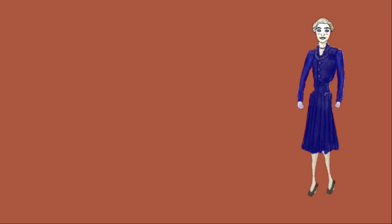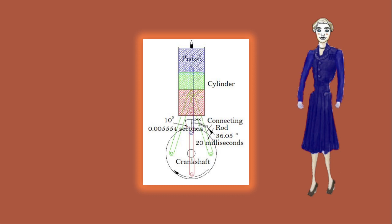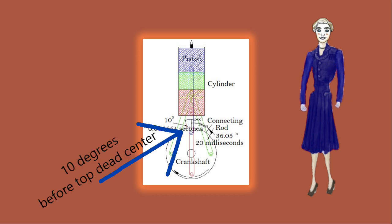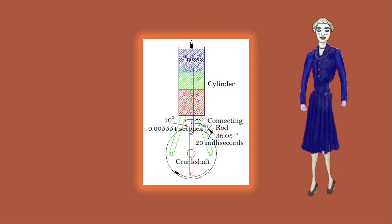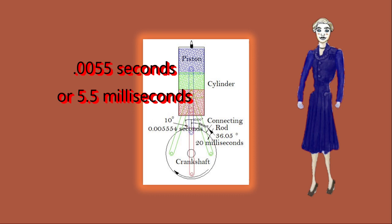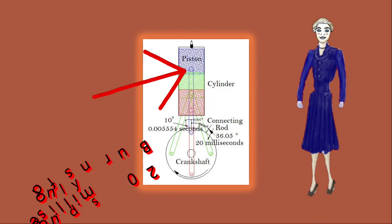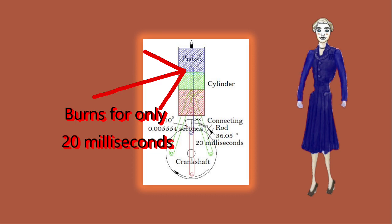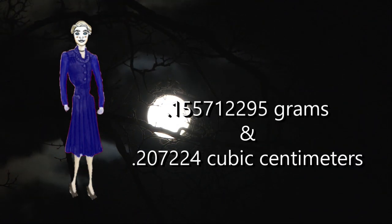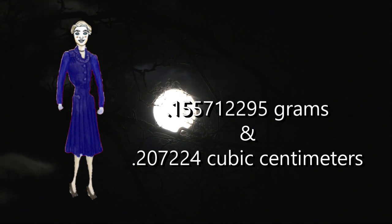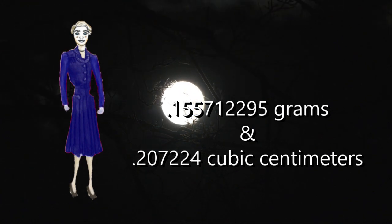The flash energy just calculated is what an internal combustion engine uses — all the rest is discarded as lost heat. In this example, 10 degrees before the piston reaches the top of the cylinder is called the dwell angle. Somewhere in this time period the spark plug fires. At 1,000 revolutions per minute this is 0.0055 seconds or 5.5 milliseconds. The burn duration of thousands of degrees and thousands of pounds of pressure happens in 20 milliseconds, like our experiment. It is important to note that 0.155712295 grams and 0.207224 cubic centimeters is the lost mass — that is, weight and volume.